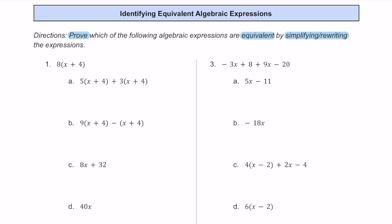For number one, we have the expression of 8 times the quantity of x plus 4. If we want to go ahead and rewrite this, we can by distributing this 8. There is more than one method to do these problems, so we're just going to distribute as one strategy here. 8 times x is 8x, and then 8 times 4 is 32. So we have 8x plus 32.